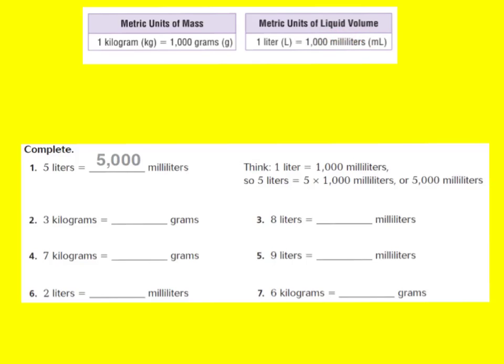On page 233 in your GoMath book, number one is asking: 5 liters equals how many milliliters? We need to go to our chart and change 5 liters to milliliters. In one liter there are 1,000 milliliters, and I have 5 liters. So I'm going to use models to show how many milliliters would be in 5 liters. I have 1, 2, 3, 4, 5 liters, and each one is worth 1,000 milliliters.